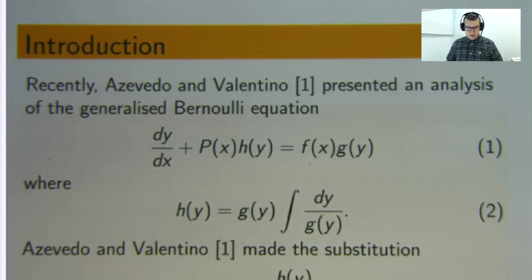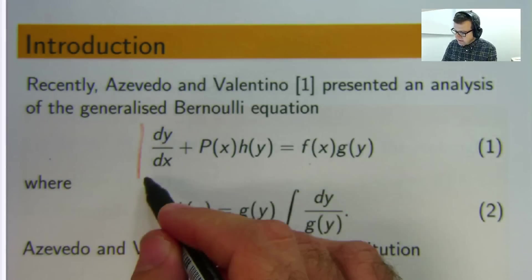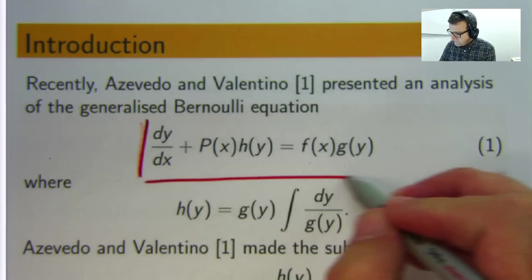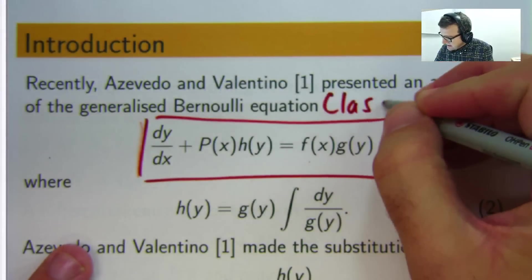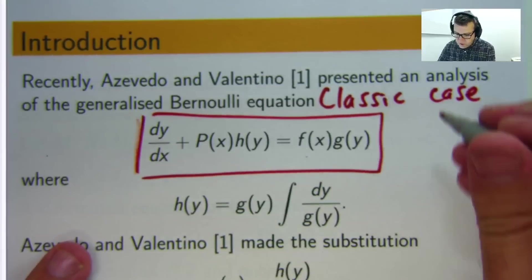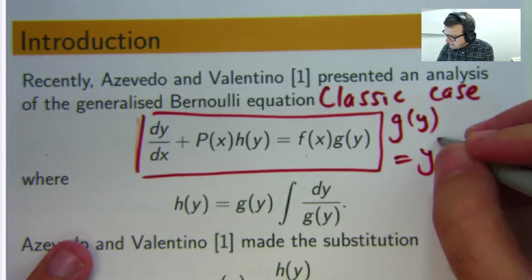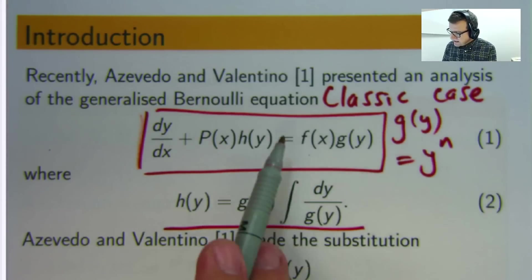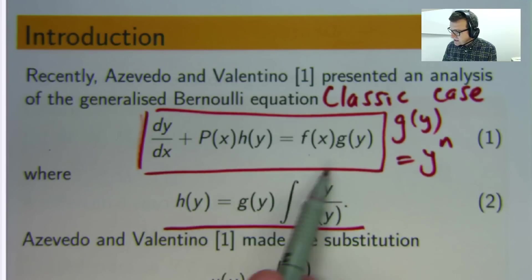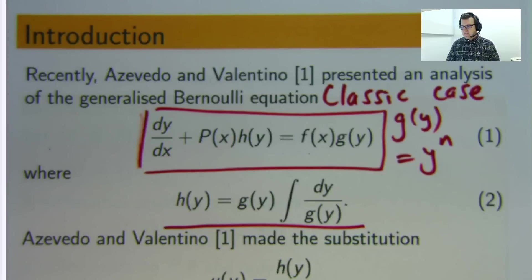Here is what is being referred to as a generalized Bernoulli equation. It's a first order problem. The unknown function is y. So you've got dy/dx plus this equals this. You'll probably see that when g of y is some sort of power function, then you get the absolute classic Bernoulli problem that you would see in a first course in differential equations. Now, Azevedo and Valentino made this following assumption. They assumed that this h of y is sort of like a combination of this g of y and the integral of 1 on g of y. I'll make that same assumption.